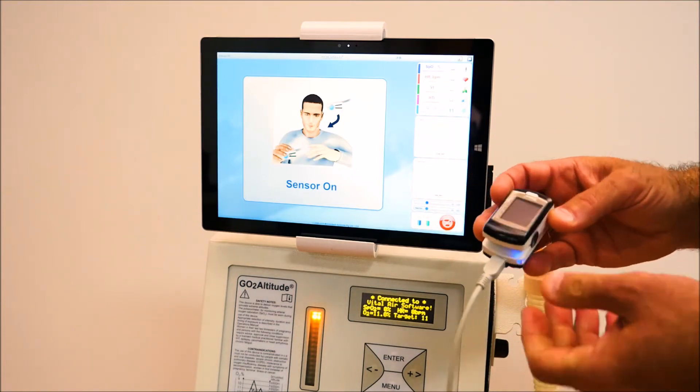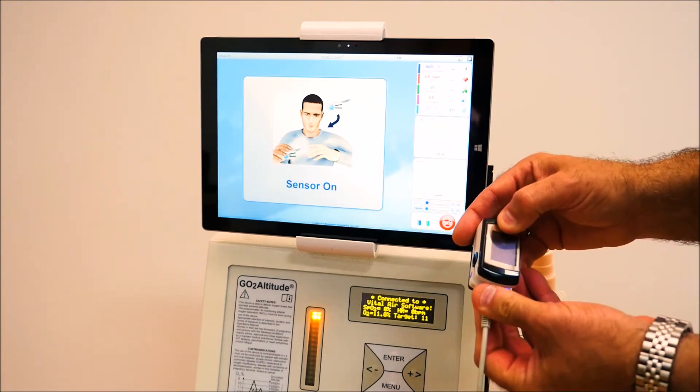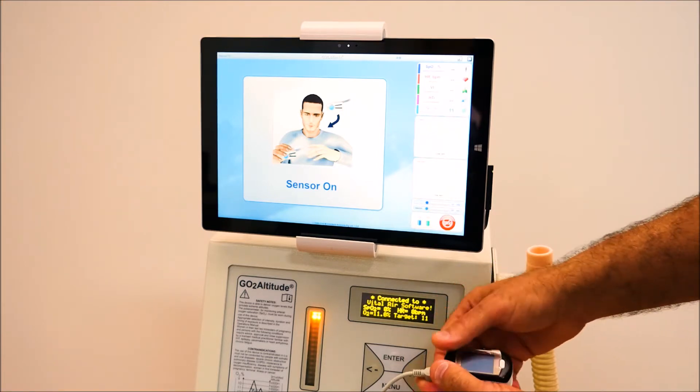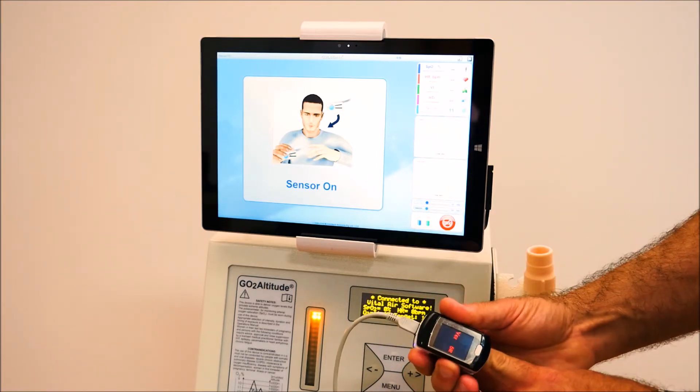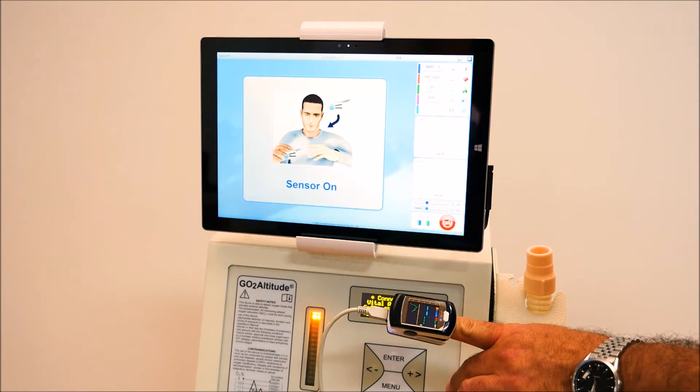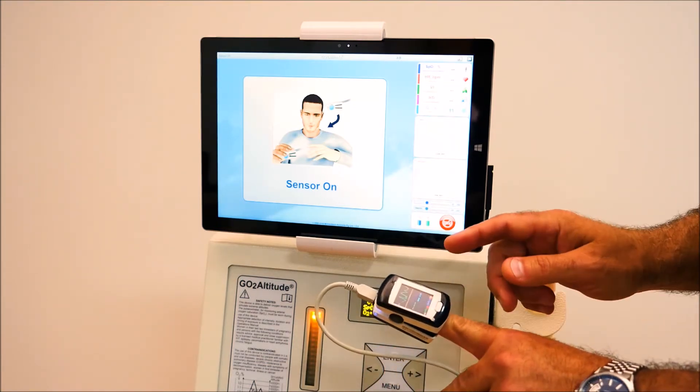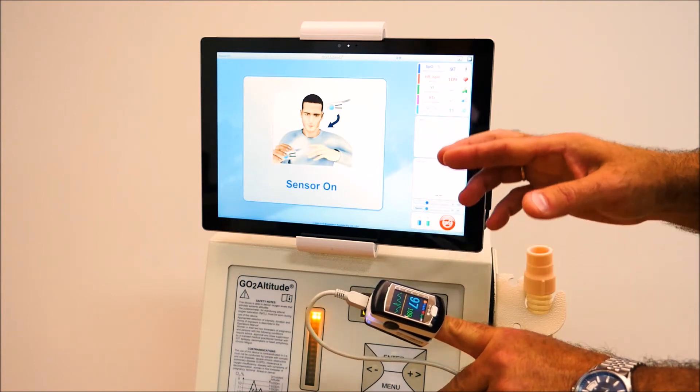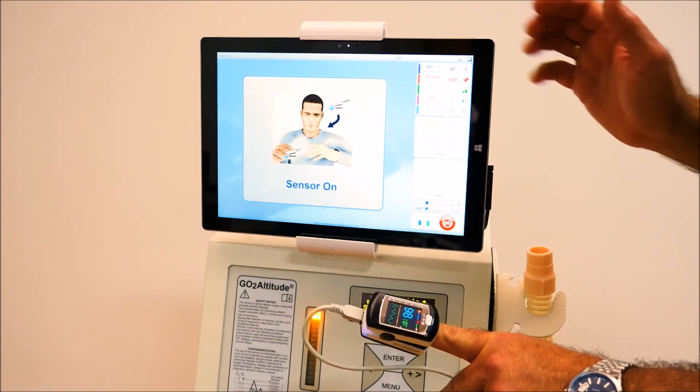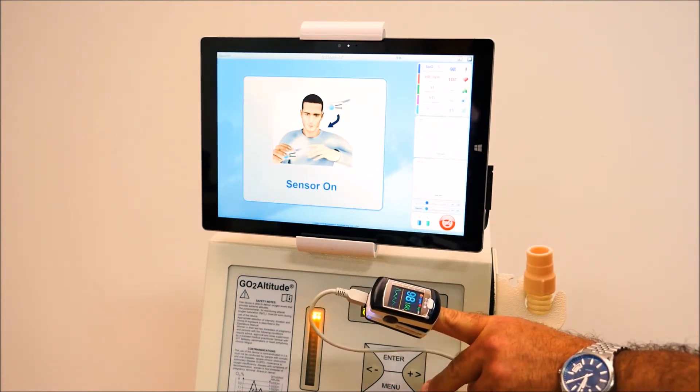An important step is to power on the pulse oximeter and put it onto the client's finger. Once the signal from the pulse oximeter is detected by the software, the training session begins.